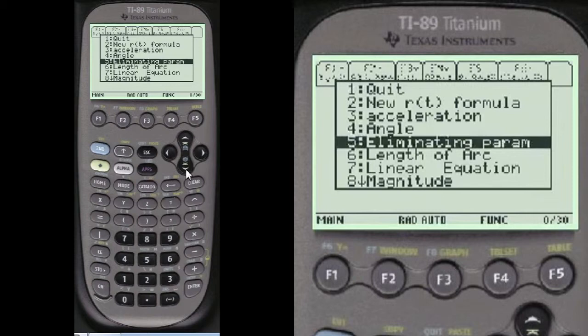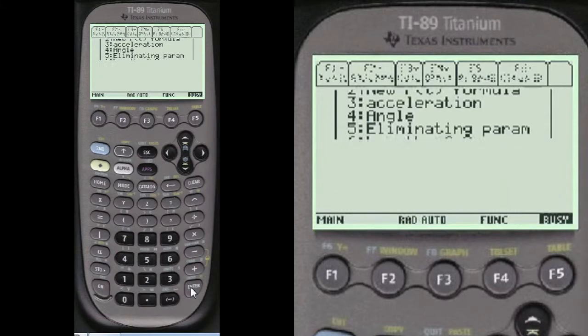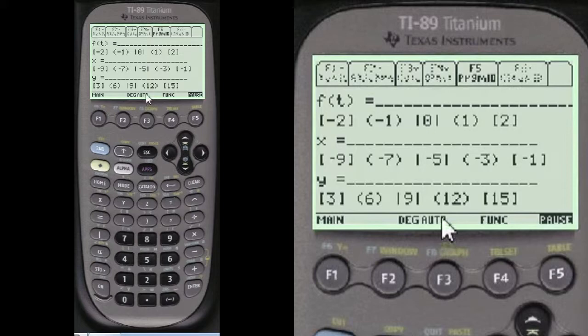And we can do several things with that. For instance, sketch by hand. We can take these. And here's what I'm using for the t parameter: 0, minus 1, minus 2, and then 1 and 2. When you enter those into the equations that we entered at the beginning, x becomes minus 9 and y is 3, minus 7 and 6, minus 5 and 9, minus 3 and 12, minus 1 and 15.